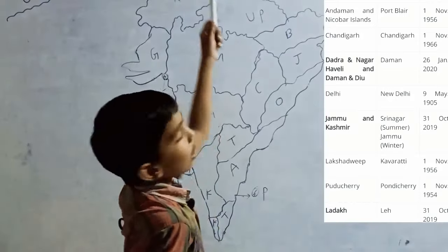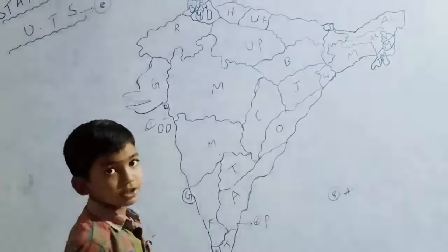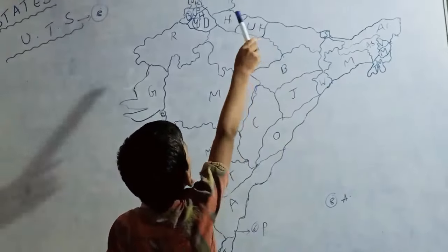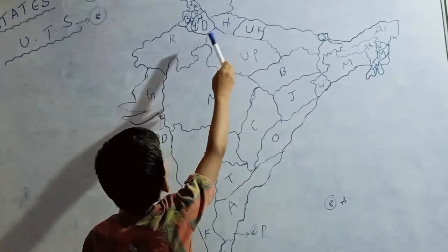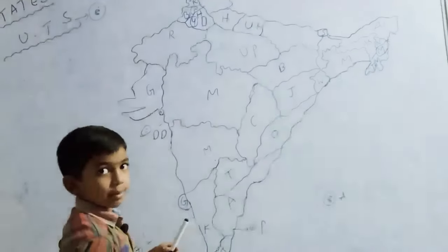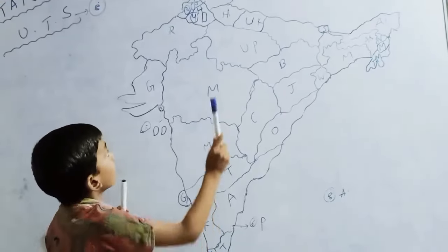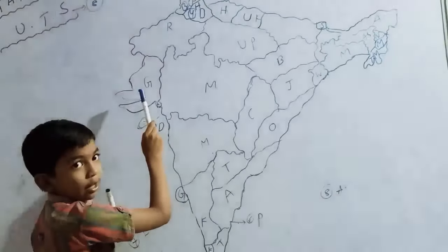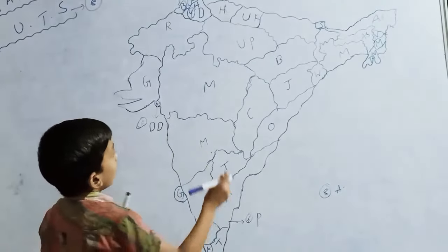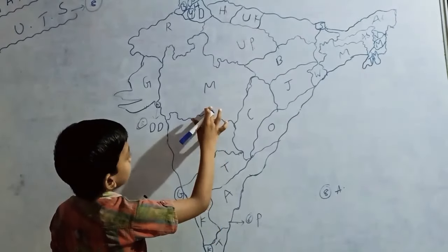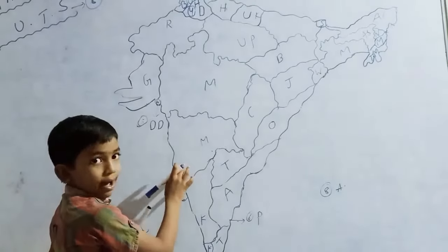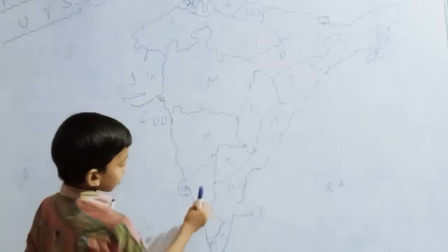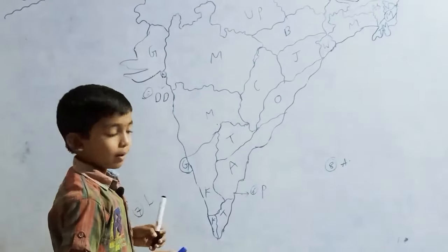After, we will learn 28 states. What are the 28 states? First one, Himachal Pradesh — Shimla. Rajasthan — Jaipur. Gujarat — Gandhinagar. And Madhya Pradesh — Bhopal. And Maharashtra — Mumbai. And Karnataka — Bengaluru.